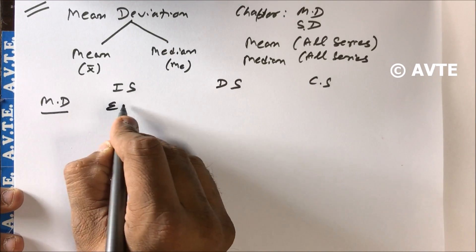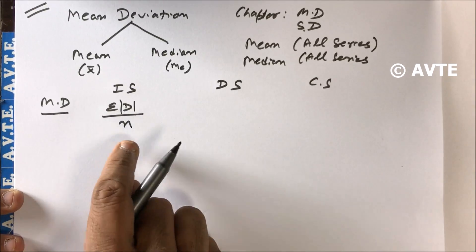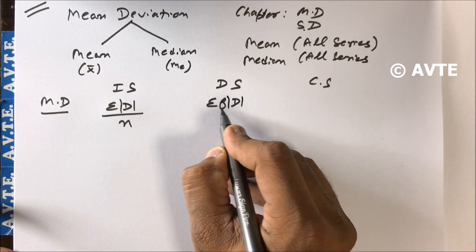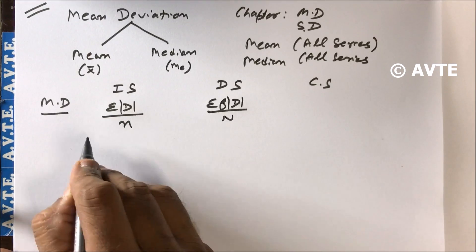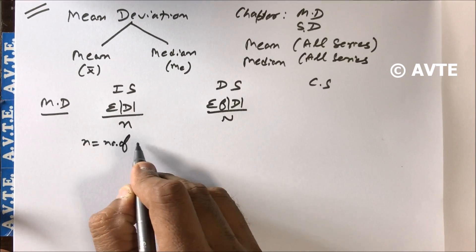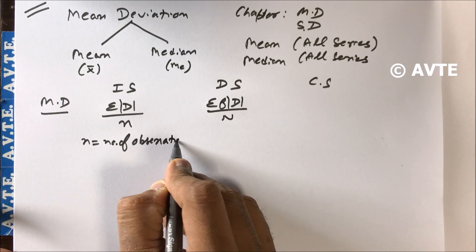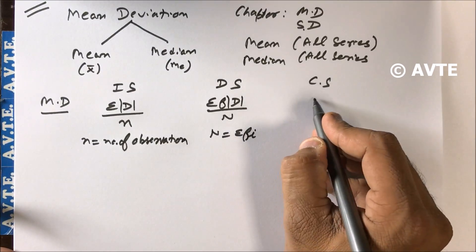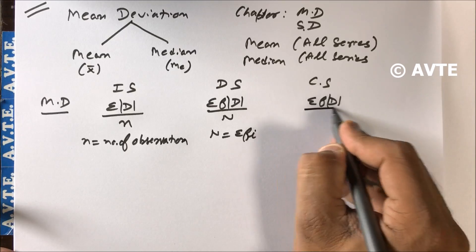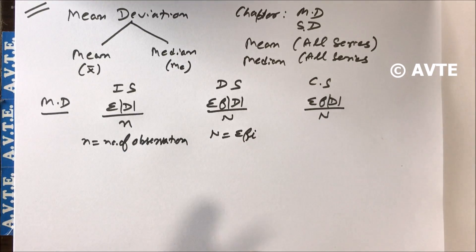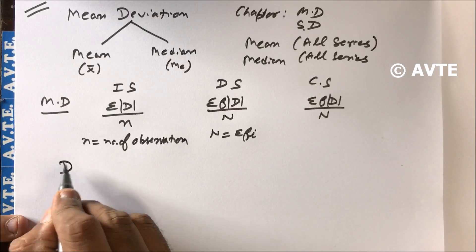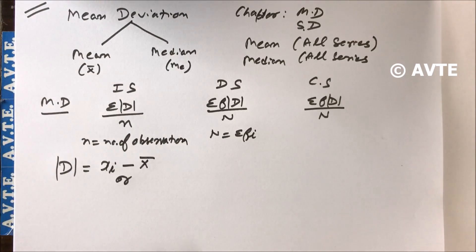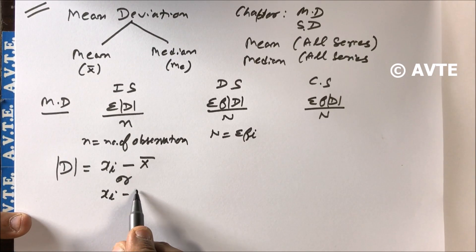Just have a look at the formulas for mean deviation. The formula is the same whether you use from mean or median. For individual series: sigma mod D upon small n, where n is number of observations. For discrete series: sigma f mod D upon capital N. For continuous series: the same formula, sigma f mod D upon capital N. Mod D is xi minus mean, or xi minus median.